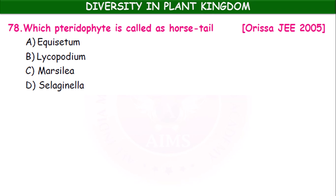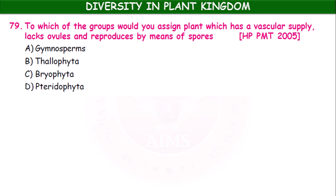Which pteridophyte is called a horse tail? It is Equisetum, a pteridophyte. To which group of plants would you apply ovules — gymnosperms, bryophytes, or pteridophytes? Once again, it is the pteridophyte group.